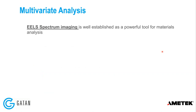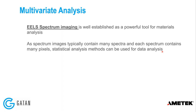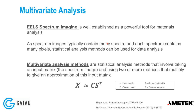So, multivariate analysis — what is it? EELS spectrum imaging is well-established as a powerful tool for materials analysis. Spectrum images typically contain many spectra, each with many pixels, and we can treat these statistically. Multivariate analysis methods involve taking an input matrix X, which is the spectrum image, and decomposing it into two or more matrices that multiply to approximate X: C is the component matrix, S is the scores matrix, and T denotes the transpose.